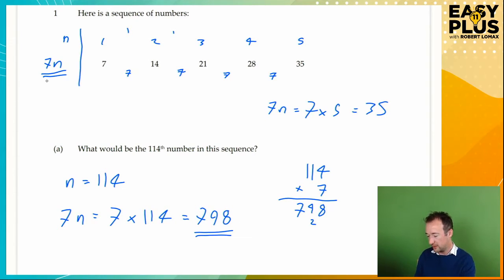So it's dead simple. You find an expression that gives you the main numbers in the sequence, that's 7n, and relates that to the number of the term, 1, 2, 3, 4, 5. And then you use that, you plug the numbers in, and out pops the answer.